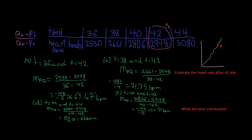P is our point on the graph. All the other points are Q. We have Q points on both sides of P, and they are connected by a secant line. We are trying to estimate by getting the secant line closer and closer to P.